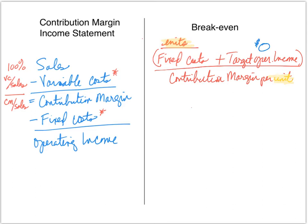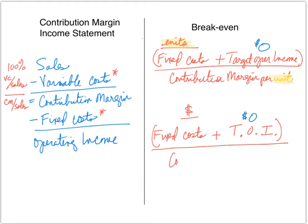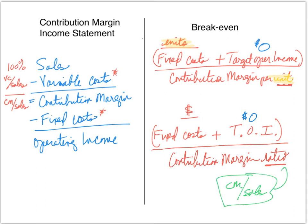To find breakeven in dollars, the formula is very similar: fixed costs plus target operating income — again, $0 at breakeven — divided by the contribution margin ratio. So to find breakeven in units, we divide by a per-unit number; to find breakeven in sales dollars, we divide by the contribution margin ratio, which is contribution margin divided by sales.